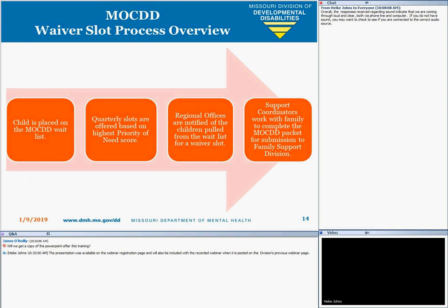Once placed on the MO-KID waitlist, slots are offered quarterly based on the highest priority of needs score. Offices are notified of the children pulled from the waitlist for a waiver slot. Support coordinators or information specialists work with the family to complete the MO-KID packet for submission to Family Support Division. If the child has active MO-HealthNet spend-down, a MO-KID packet does not need to be completed. This is one reason families should be encouraged to maintain spend-down eligibility, even if they are unable to meet the spend-down — Family Support Division does not require any information for children with a spend-down when processing for MO-KID eligibility.